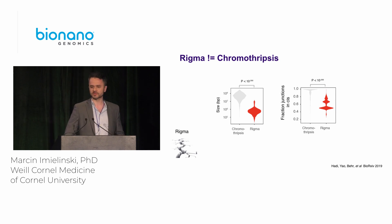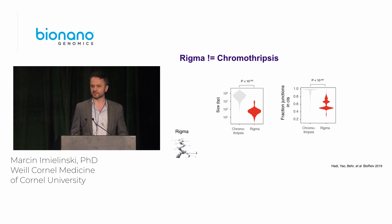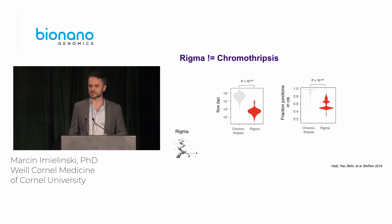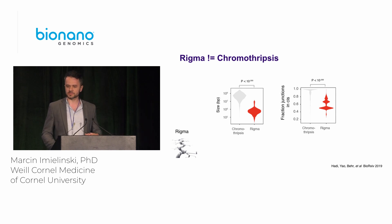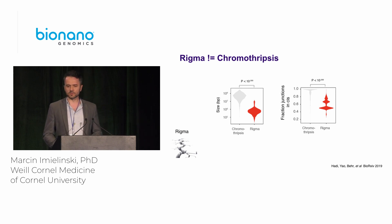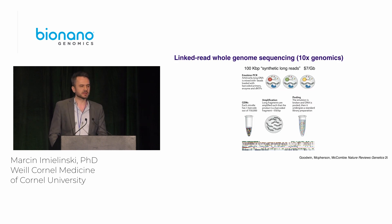We think RIGMA is the somatic footprint of genomic fragile sites, which are thought to arise from replication-transcription collisions in genes that take longer than a single cell cycle to transcribe. RIGMA are not chromothripsis: they're much smaller in size — on the order of a megabase rather than tens or hundreds of megabases. When we try to reconstruct the linear allelic structure of RIGMA using Illumina-based genome graphs, it's very hard to place the junctions in cis, whereas with chromothripsis, we can often find a single allele that walks the entire span of that event. So we pursued the hypothesis that RIGMA junctions are in trans, using linked-read whole-genome sequencing.